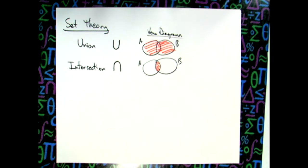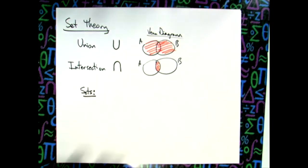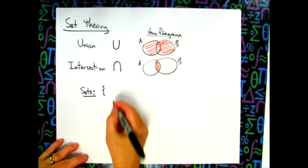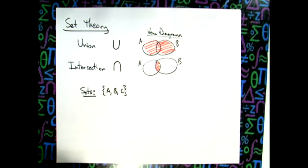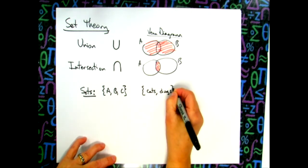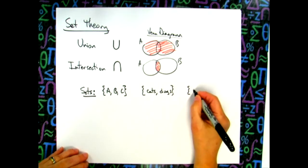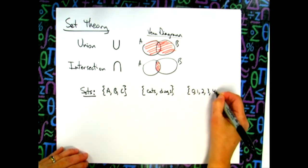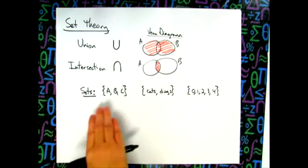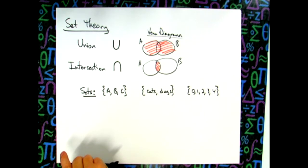In set theory, you have things called sets, and you use set brackets. You can put numbers, words, or letters inside a set — anything you want. A set with three items, a set of letters, or a set of words like 'cats, dogs' — the items inside are called elements. Sets don't always contain just numbers.